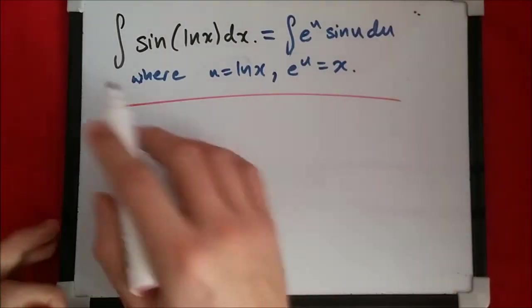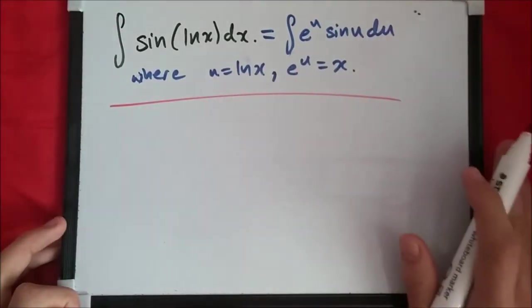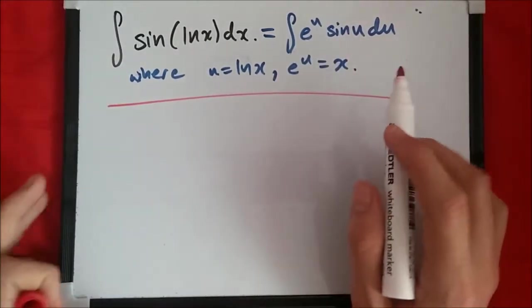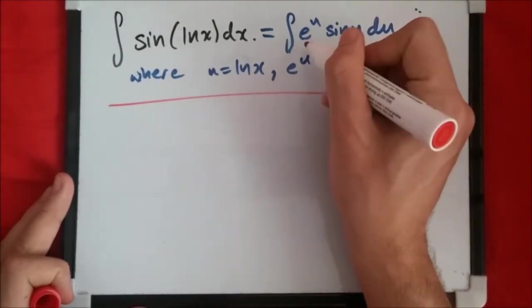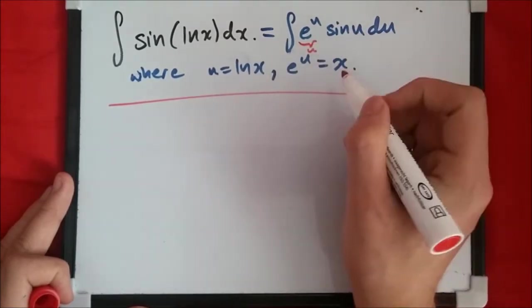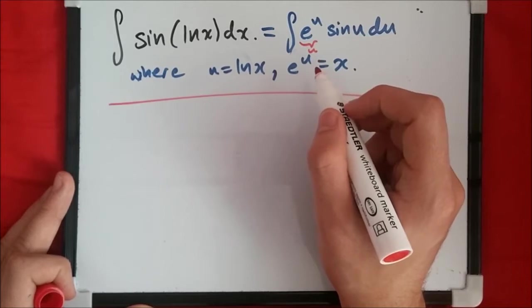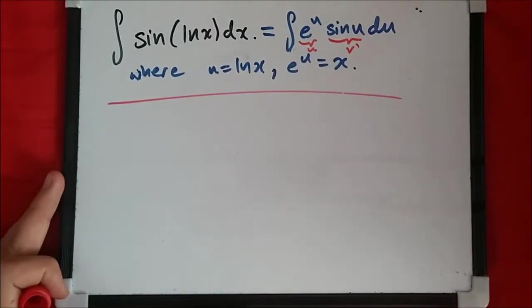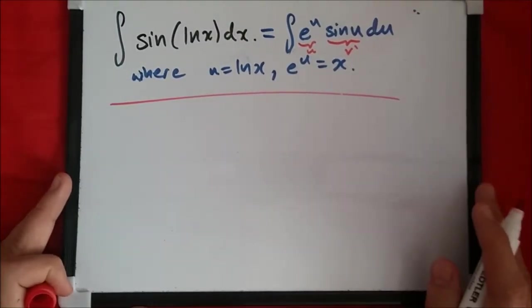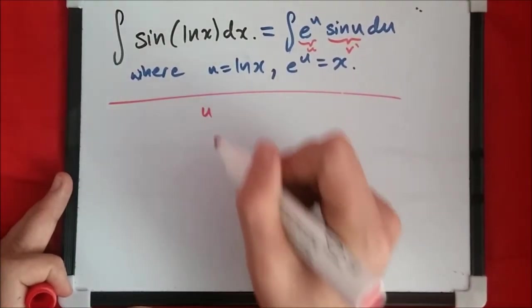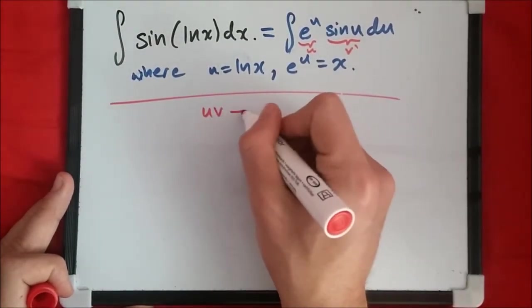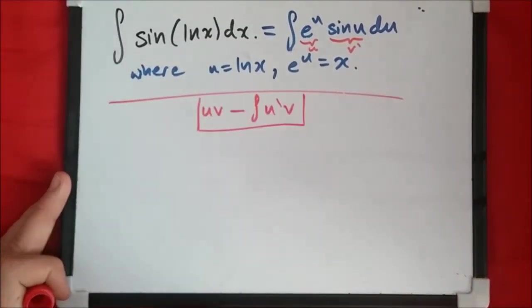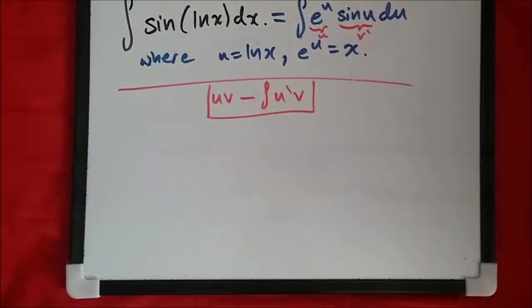Okay guys, we're back. I just put everything on the top line so you can see more clearly. In this part we're gonna integrate by parts. We need to select our u and v prime. I will select e to the u as u because as you differentiate it's still e to the u. Sine u of course would be my v prime. For those who can't remember integration by parts, we solve it by computing uv minus the integral of u prime times v.